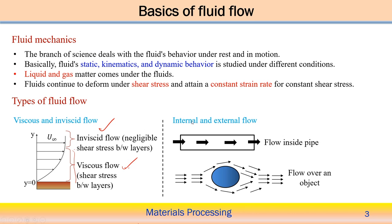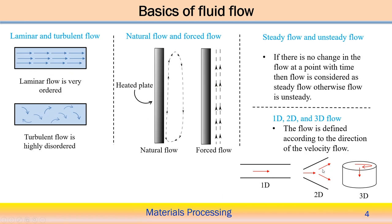Sometimes we say internal flow and external flow. Flow within a pipe is called internal flow, and flow over an object is called external flow. There is another variant: laminar flow and turbulent flow. Laminar flow is relatively ordered, but turbulent flow is highly disordered. There is a particular number — the Reynolds number — based on which we can distinguish whether it is laminar flow or turbulent flow.